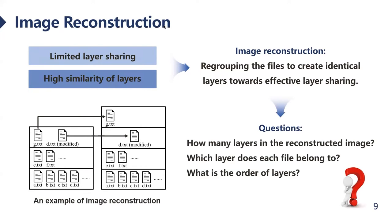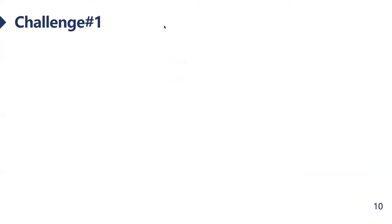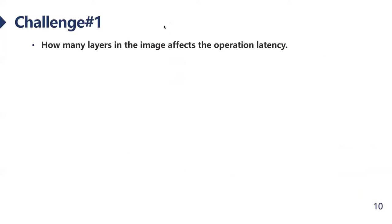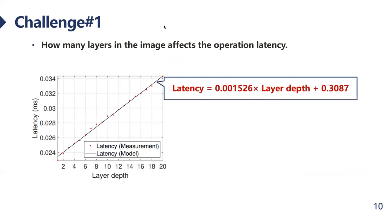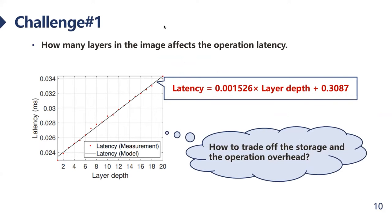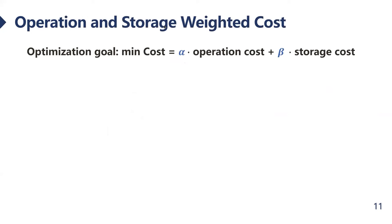We have to answer three questions in image reconstruction: how many layers are in the reconstructed image, which layer does each file belong to, and what is the ordering? The number of layers affects operation latency on container files — operation latency increases with layer depth according to our measurement. Using a practical data fitting approach, we present this with a mathematical formula. To trade off storage usage against operation overhead, we propose a weighted operation cost and storage cost. Alpha and Beta are the weight parameters. Operation cost is defined as the sum of operation latency of each layer, and storage cost is defined as the incremental storage of new unique layers.